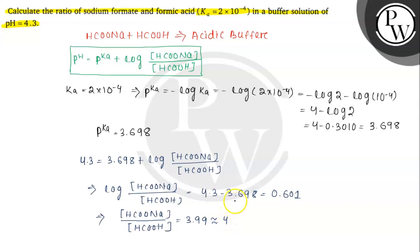So the ratio of sodium formate to formic acid is 4 is to 1.